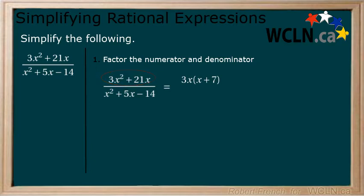Next, we factor the denominator. Positive 7 and negative 2 add together to get 5 and multiply together to get negative 14, so our denominator is x plus 7 multiplying x minus 2.